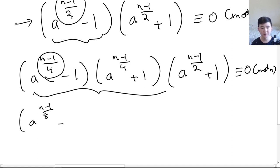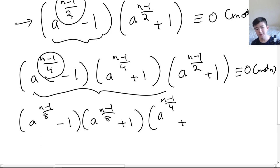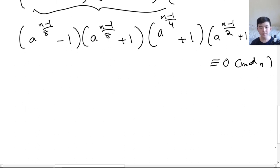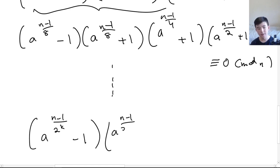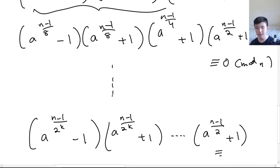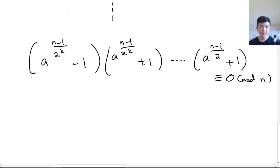We keep factorizing the leftmost minus-1 term using difference of squares as long as the exponent remains even. We do this until the exponent becomes odd. So we eventually end up with an expression: (a^((n−1)/2^k) − 1)(a^((n−1)/2^k) + 1)···(a^((n−1)/2) + 1) ≡ 0 mod n, where the leftmost exponent is odd and can no longer be factorized further.